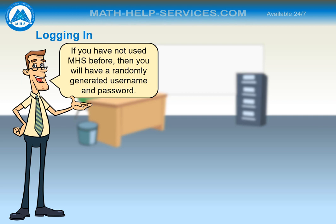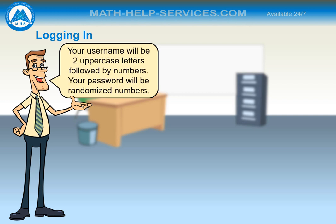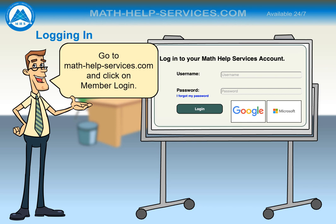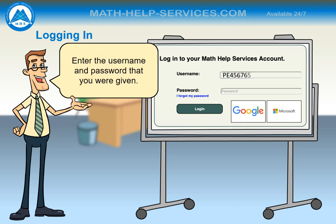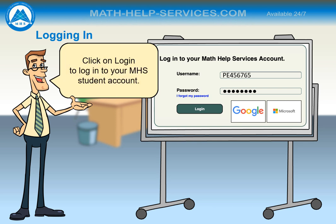If you have not used MHS before, you will have a randomly generated username and password. Your teacher will either give you a printed copy of your credentials or email them to you. Your username will be two uppercase letters followed by numbers. Your password will be randomized numbers. Go to math-help-services.com and click on Member Login. Enter the username and password that you were given. Your username and password are case sensitive, so use uppercase letters where required. Click on Login to log into your MHS student account.